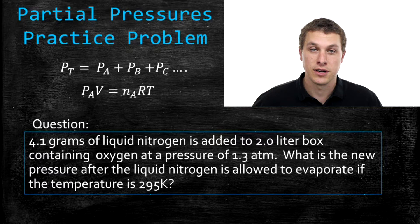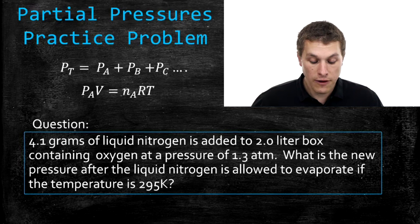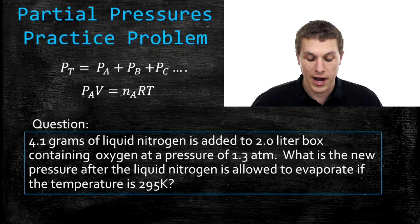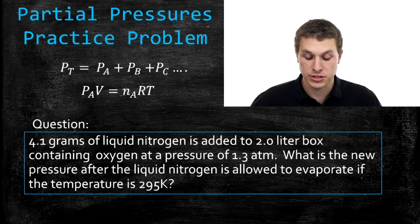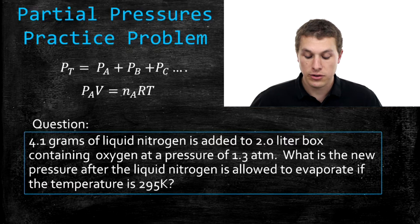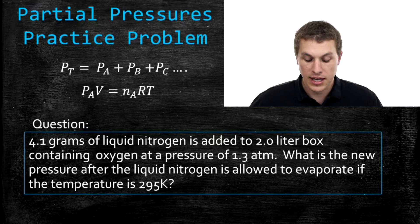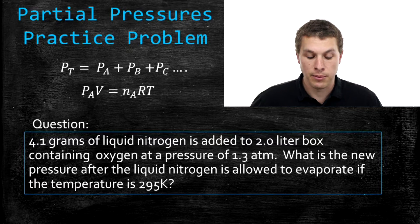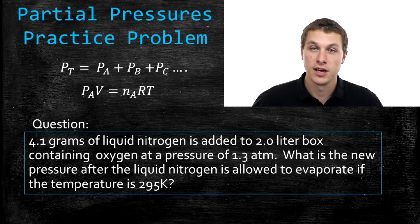So the question we're going to try to answer in this video asks, if 4.1 grams of liquid nitrogen is added to a 2 liter box containing oxygen at a pressure of 1.3 atm, what is the new pressure after the liquid nitrogen is allowed to evaporate? If the temperature is 295 Kelvin. So there's a lot going on there in that problem and we're going to unpack it piece by piece and show you how to solve it.